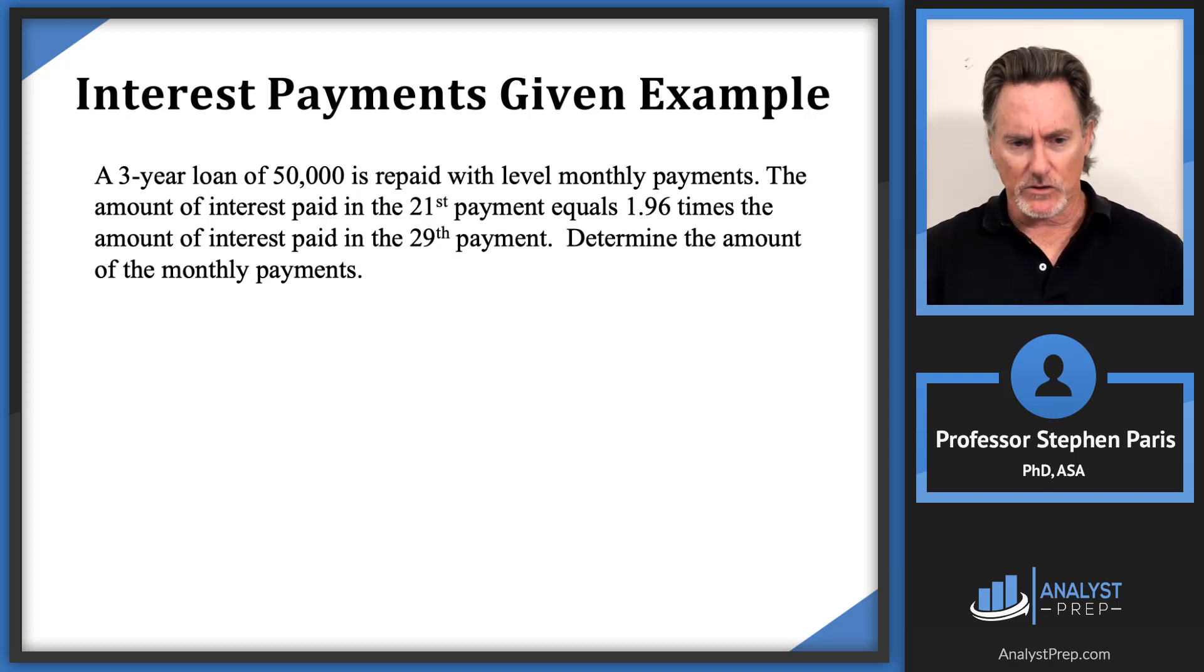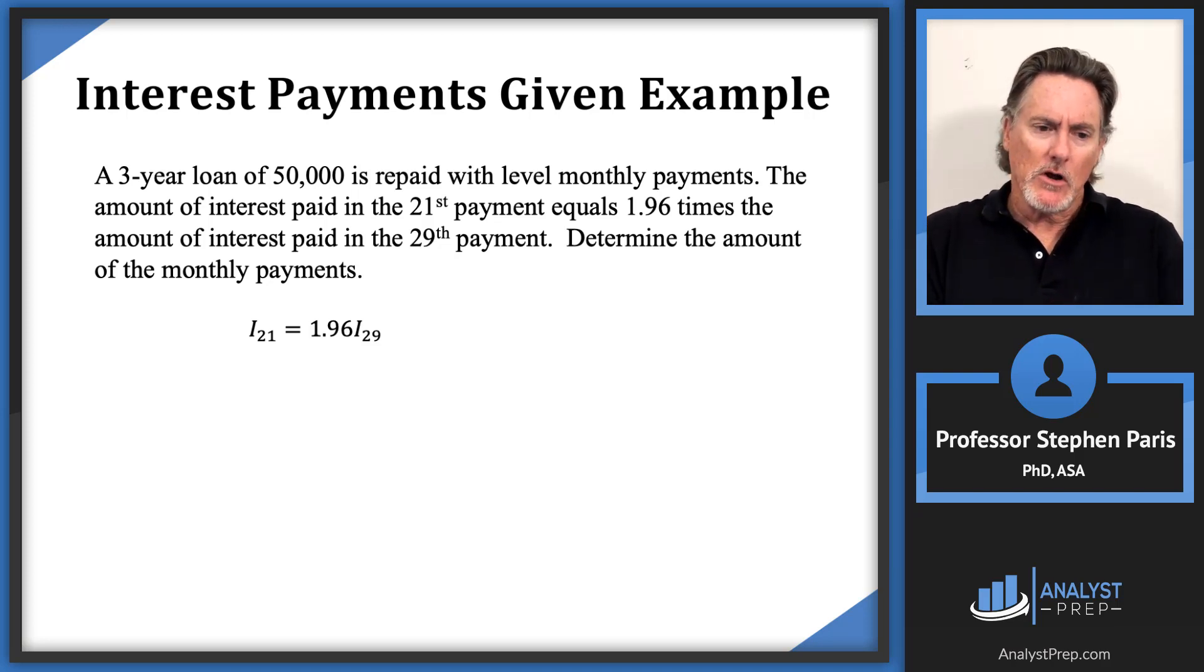Okay, so let's look at the second sentence and try to write that mathematically. The amount of interest paid in the 21st payment, that's what we symbolically represent by I sub 21. So I got I sub 21 equals 1.96 times I sub 29.